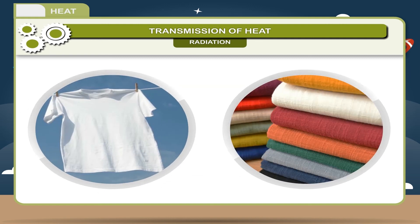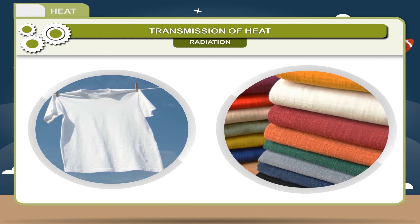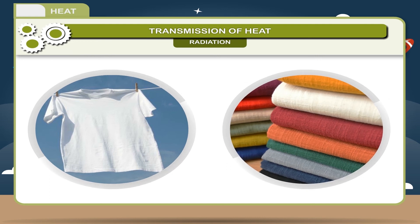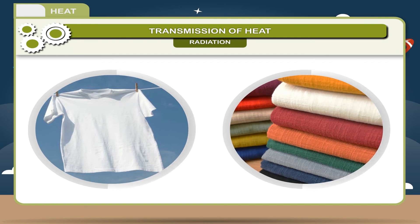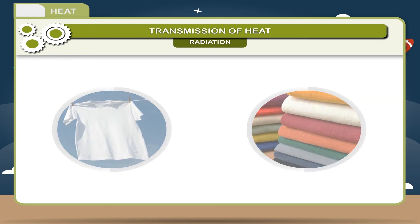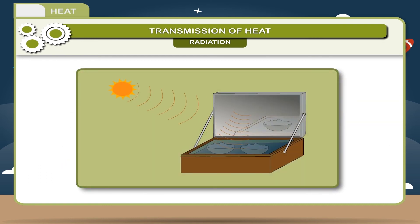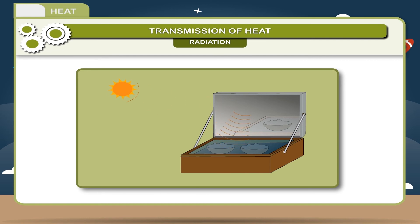White clothes are preferred during summers because white color is a good reflector of heat while colored clothes absorb more heat from the sun. Inside surface of a solar cooker is painted black so that it can absorb a large quantity of heat from the sun and cooking can be faster.